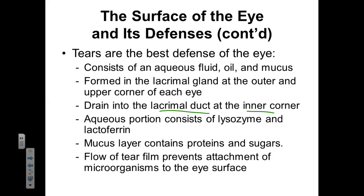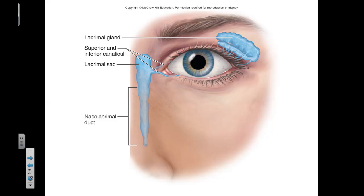Our mucus also has a lot of protein and sugars in it. Those proteins and sugars could potentially be a source of bacterial growth, but we have a constant flow of tears that prevents the attachment of microorganisms to the surface of our eyes — so we're constantly flushing our eyes. The lacrimal gland is at the superior lateral margin of the eye, and the tears flow medially to the lacrimal duct and sacs at the lower inner corner of our eyes.